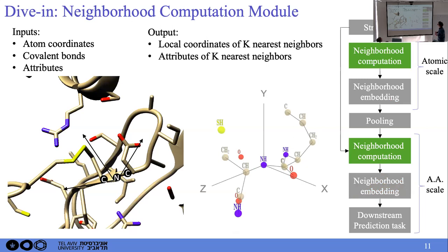Diving into specific modules: the neighborhood computation module takes as input the 3D coordinates for every atom of a protein structure, the corresponding covalent bonds, and atom-type attributes. The output is, around every atom, local coordinates of the k-nearest neighbors and their corresponding attributes. The key ingredient is defining a local frame using the orientation of the covalent bonds. By doing so, the local coordinates are invariant upon translation and rotation of the input.